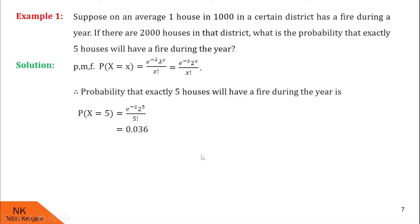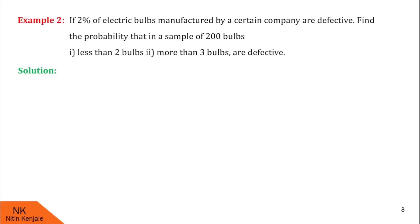I hope you understood this example. Now let us proceed for the next one. In this example, we are given that if 2% of electric bulbs manufactured by a certain company are defective, then find the probability that in a sample of 200 bulbs: number 1, less than 2 bulbs are defective, and number 2, more than 3 bulbs are defective.